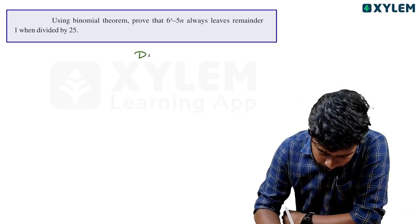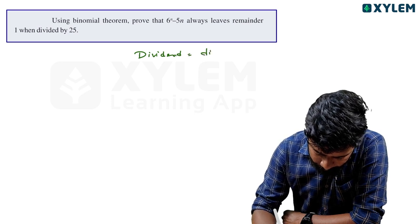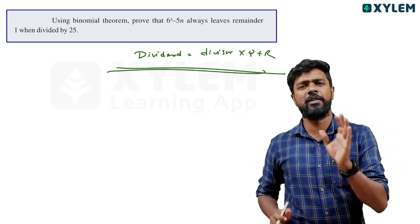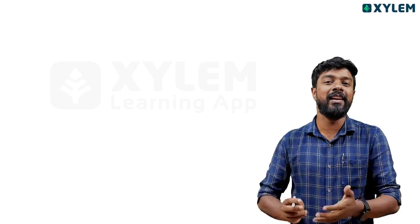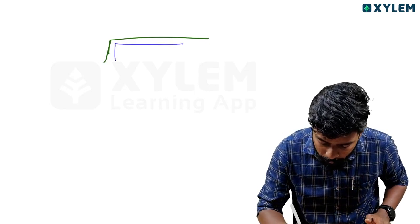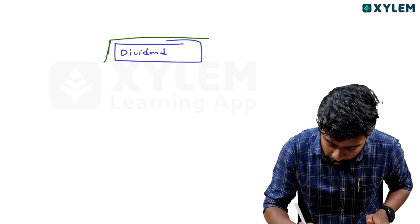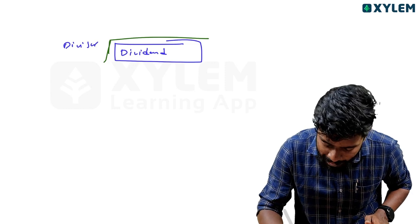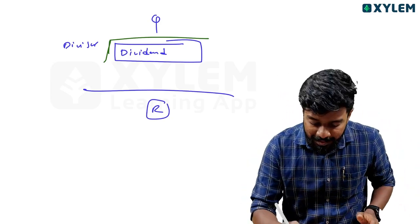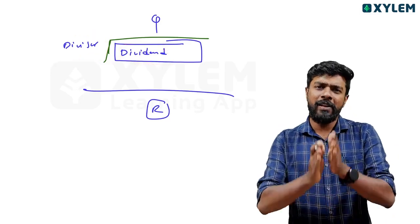This is the divisor. Divisor into quotient plus remainder. The divisor, quotient, and remainder — these are the key terms we will use.